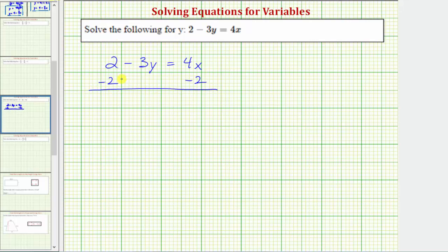So simplifying, subtracting 2 undoes positive 2, or 2 minus 2 is 0. So we have negative 3y equals, on the right side we have 4x minus 2.